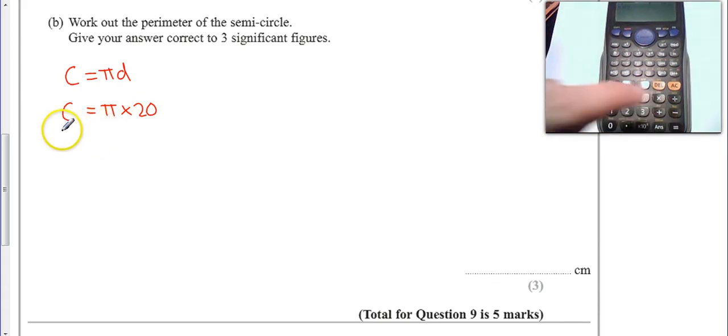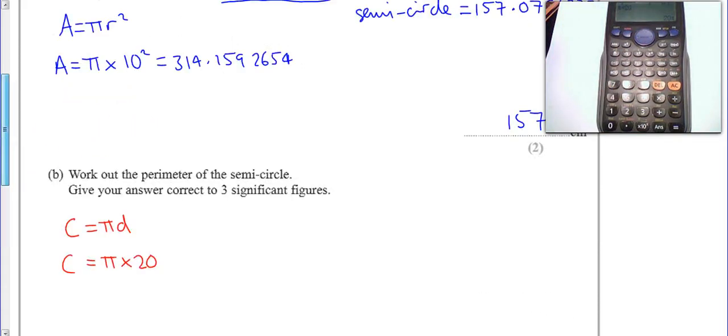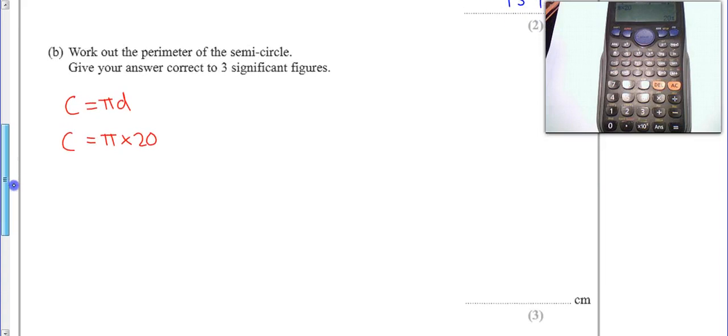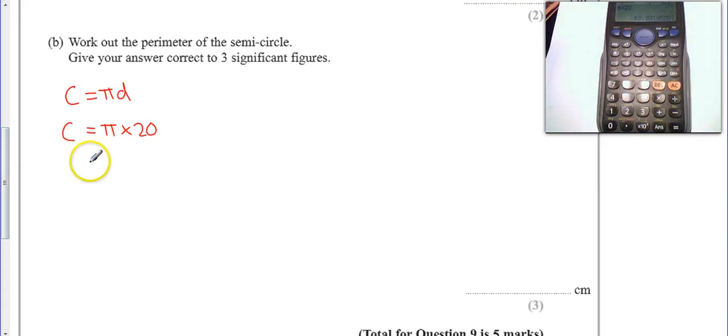Because I've chosen 20, not 10, because the 10 is only the radius here and I want the full length across. Which gives us 20 pi, which is equal to 62.83185307.